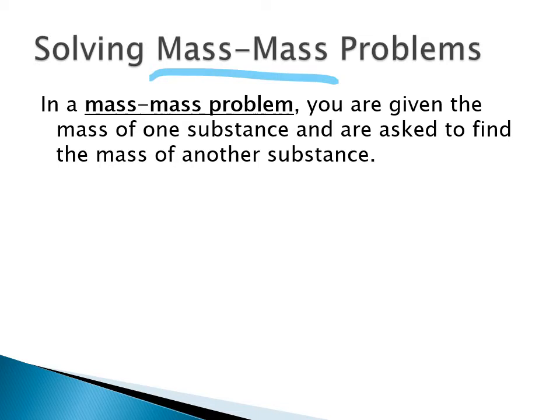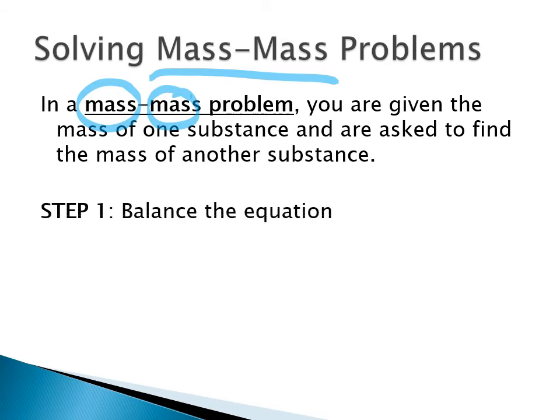The type of stoichiometry we're going to do most often is mass-to-mass problems: we start with the mass of a reactant and generally solve for the mass of a product, though we could also find the mass of another reactant or work backwards from a product. This generally involves being given the mass of something in a reaction and then finding the mass of something else, generally a product.